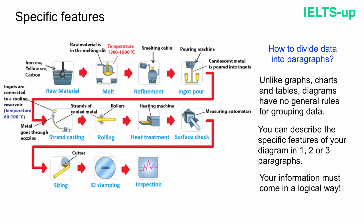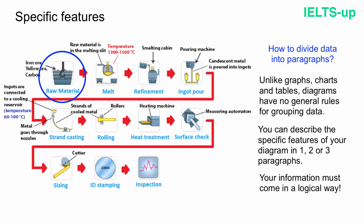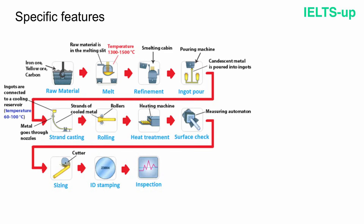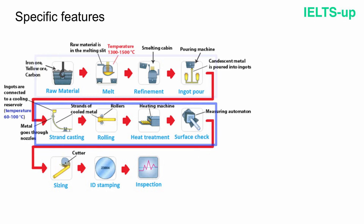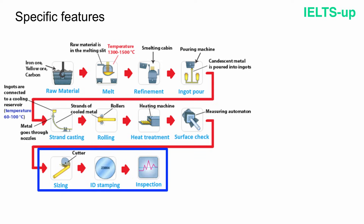Remember that you should describe the stages of your process sequentially. It's a bad idea to start with the last stage, then write about the third stage, then describe the first stage, and so on. Your information must come in a logical way. I decided to divide the specific features into three paragraphs: the first paragraph covers the first four stages, the second paragraph covers the next four stages, and the last paragraph covers the last three stages.